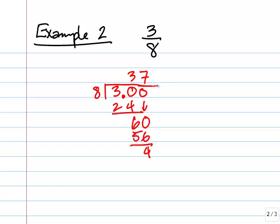And then a 4, so one more 0, drop down. 8 goes into 40 five times. And don't forget your decimal point. So 3 eighths is actually equal to 0.375.